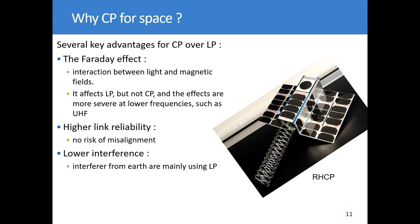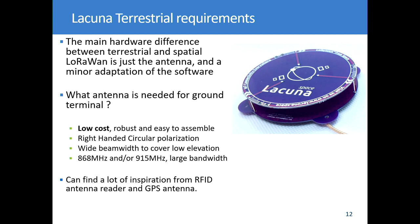A third advantage: from space you see a lot of noise coming from the ground — interference that is mainly generated by linear polarised antennas, because everybody is using LP. With CP, you gain 3 dB of noise rejection. So there are many reasons to use a circularly polarised solution for space communication.